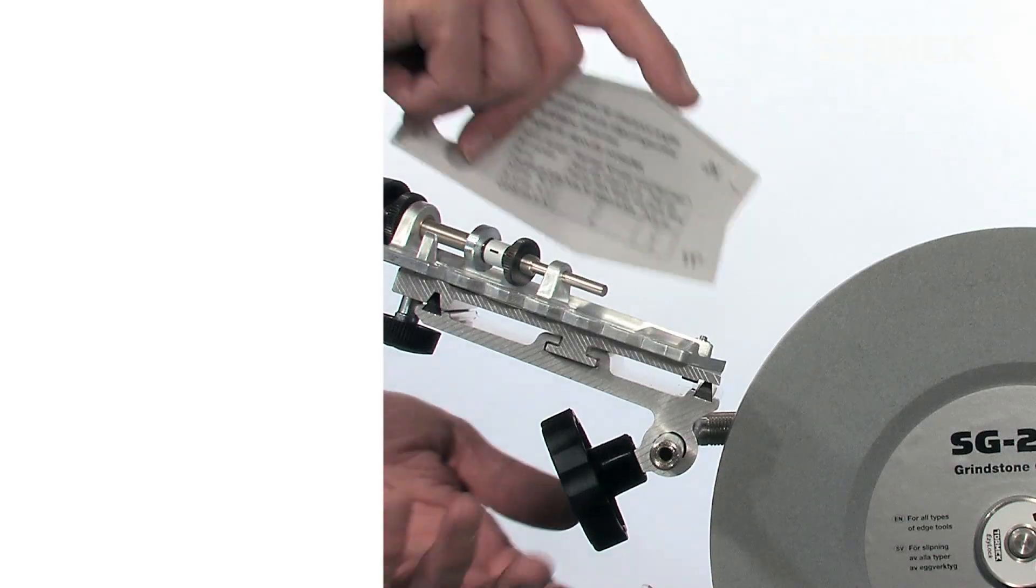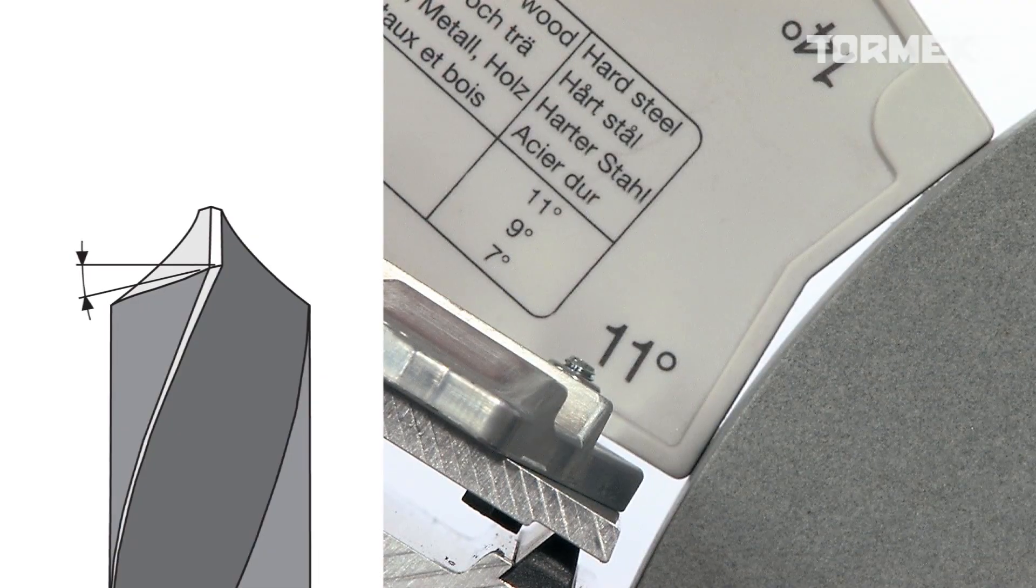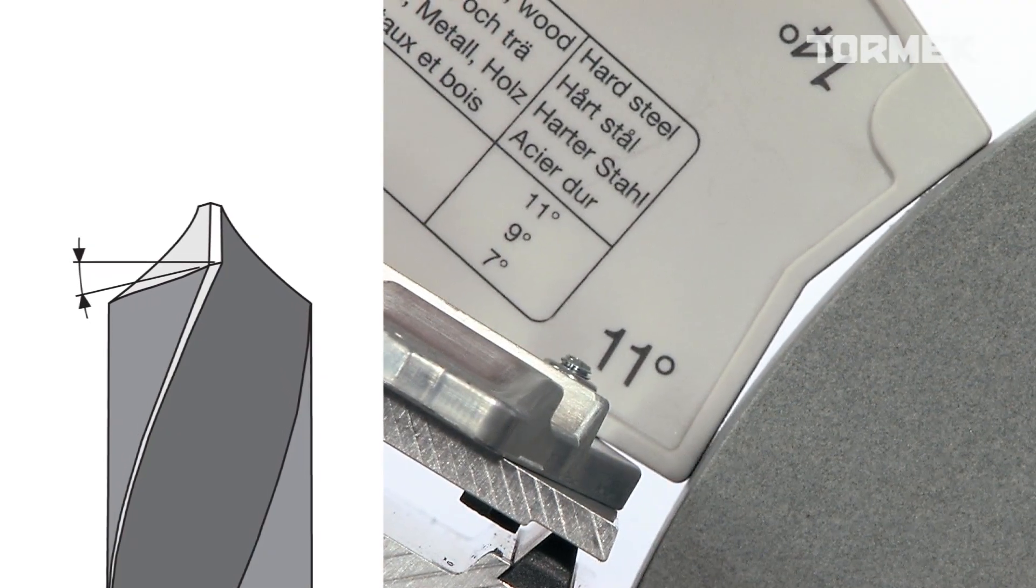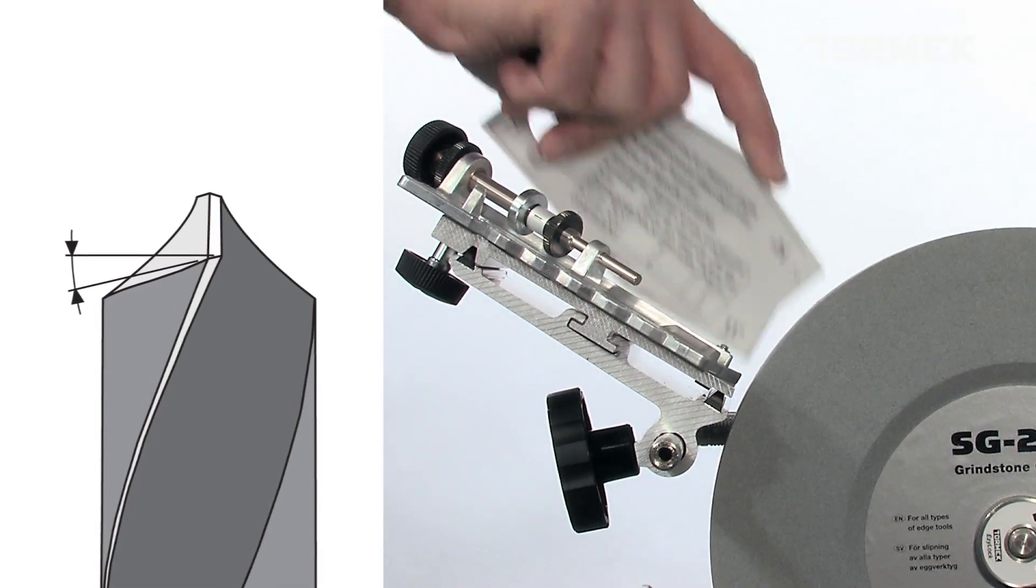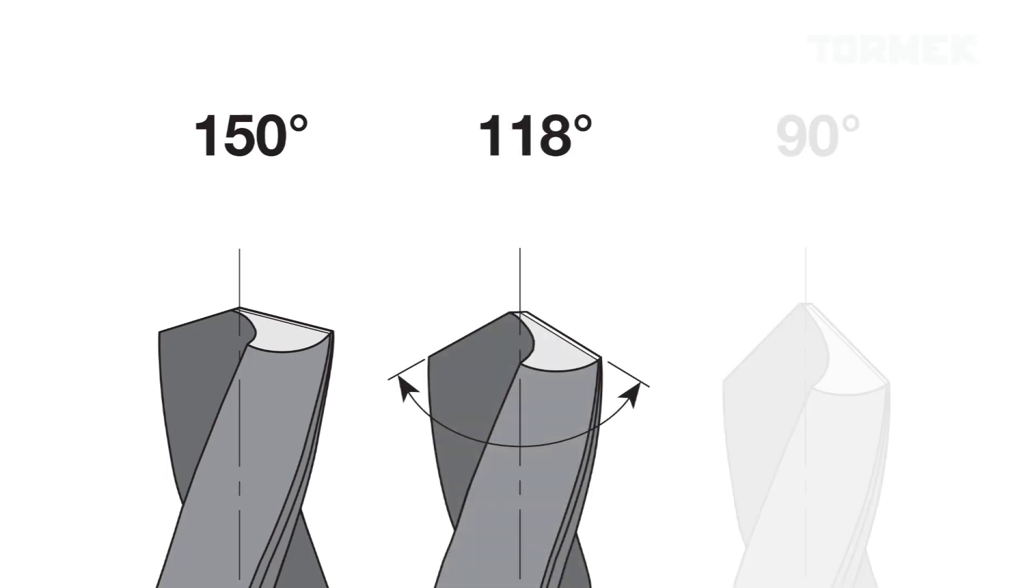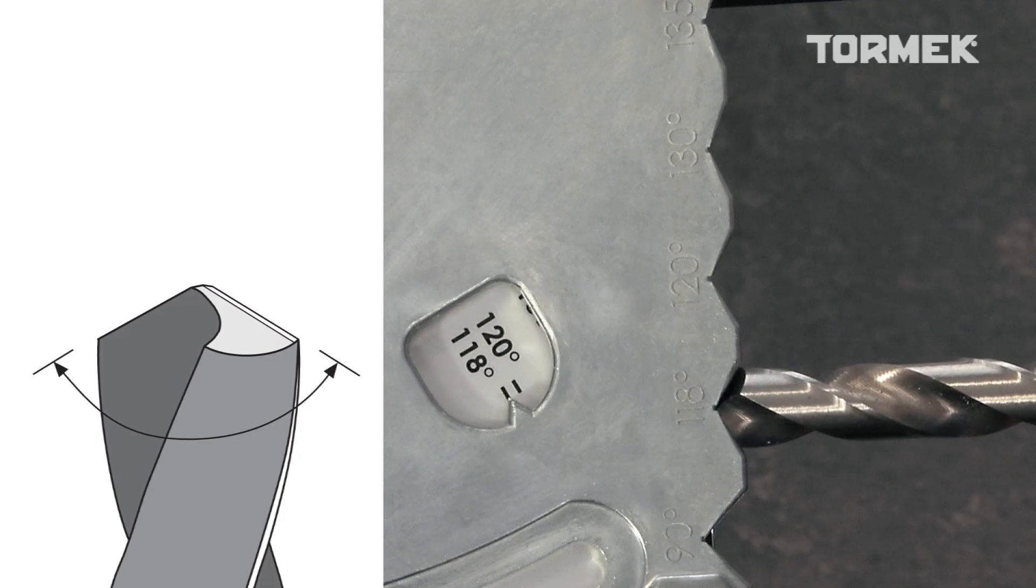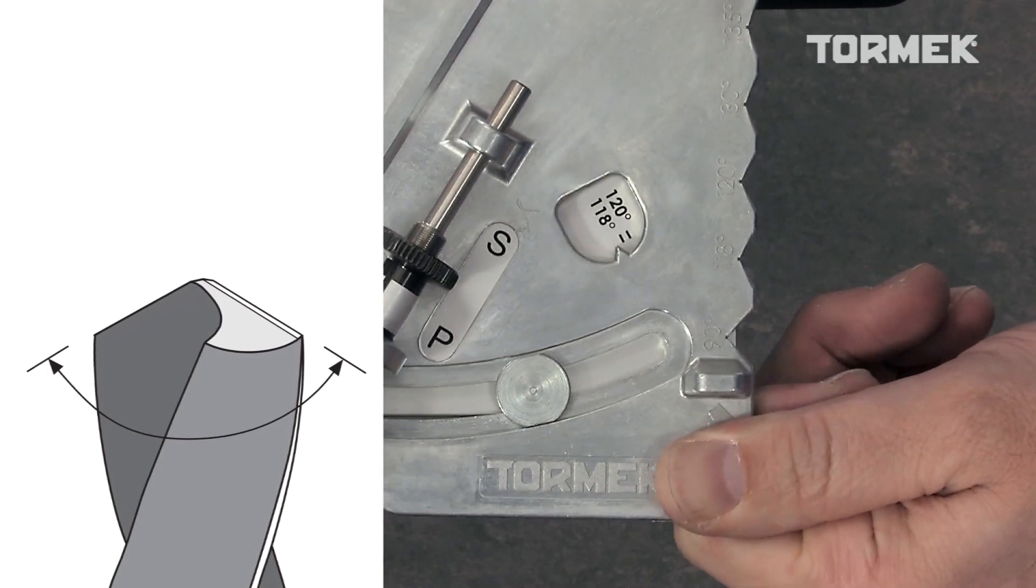Start by setting the clearance angle. On the setting template you can see recommended angles for different materials and dimensions of drill bits. A common clearance angle is 11 degrees. You can choose any point angle from 150 down to 90 degrees. 118 degrees is a common angle which works well for most types of materials.